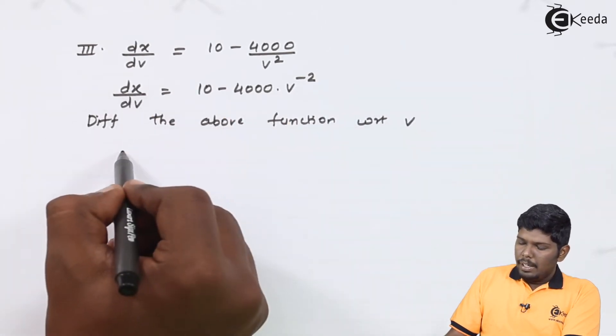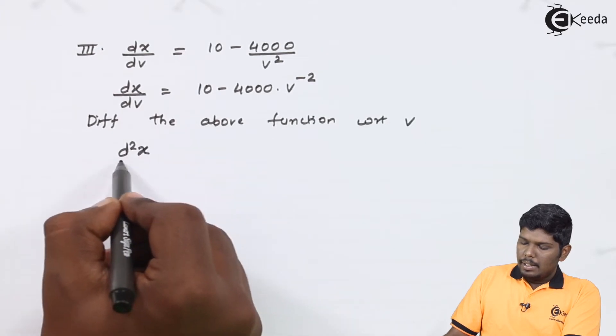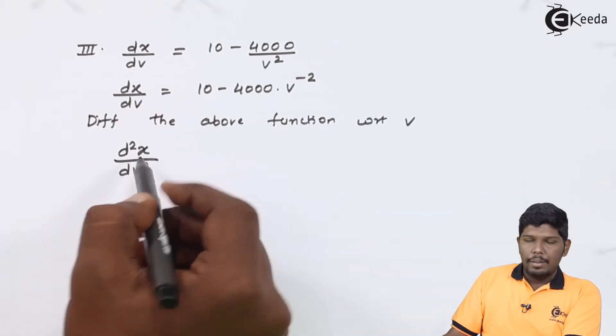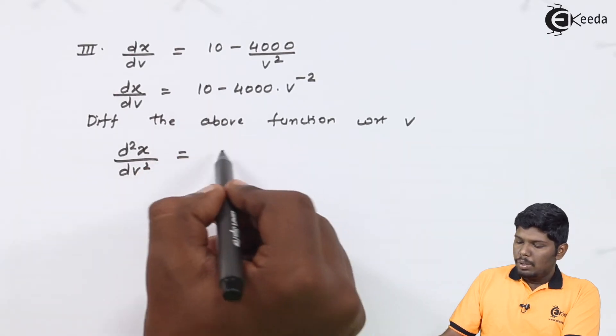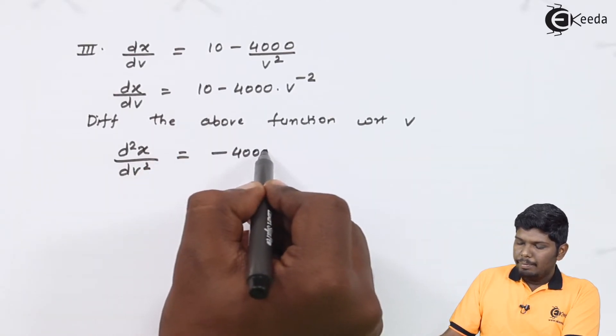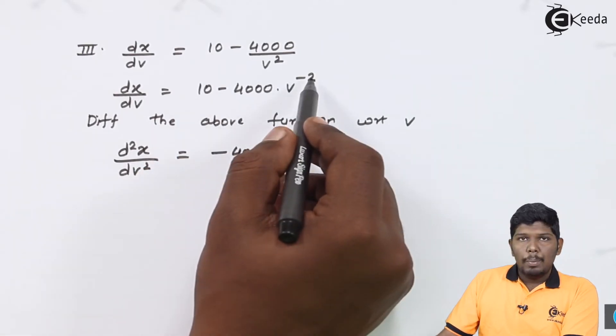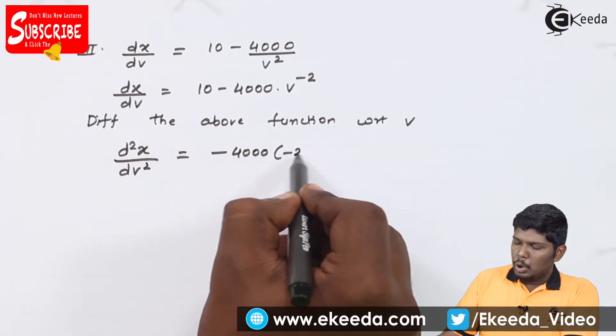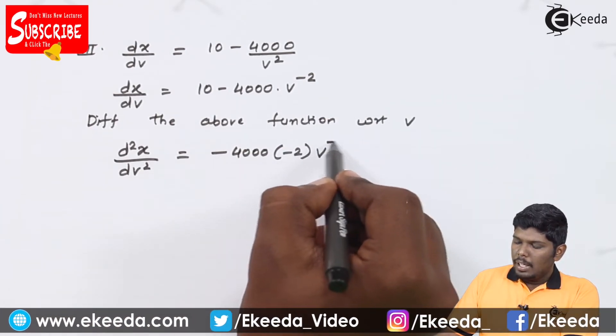Its derivative will be d²X by dV square. Derivative of 10 will be 0 minus 4000 into V raised to minus 2. Derivative will give you minus 2 into V raised to minus 3.